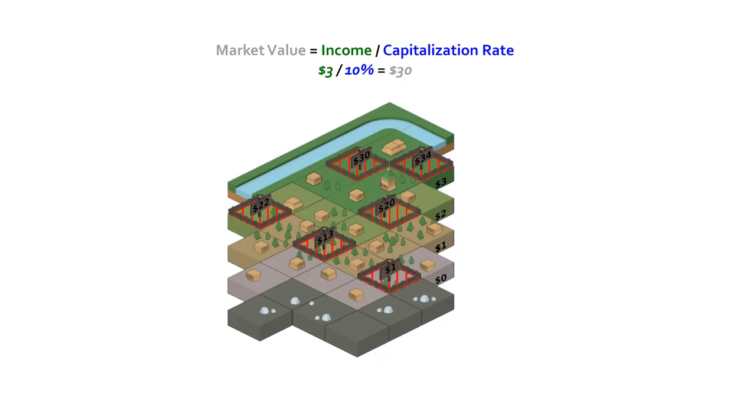If we then consider a prime grade lot, then a speculator could sell this piece of land for 3 dollars divided by 10 percent equals 30 dollars. So now we know what the market value is, but we are not completely done yet.